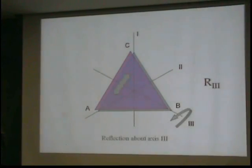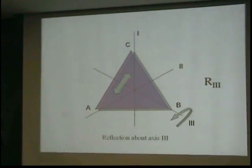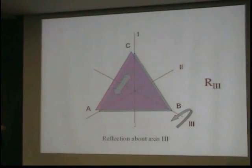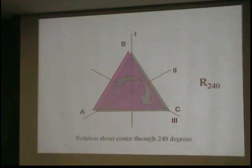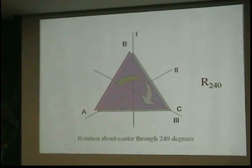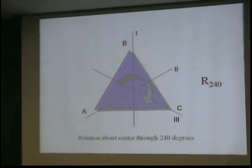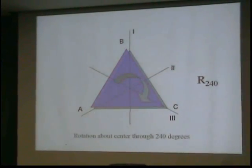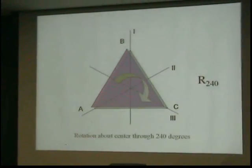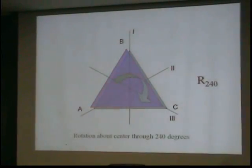Reset. Well, obviously now I can do a reflection about axis three and that will interchange A and C, but it will hold B fixed. Or we can rotate through 240 degrees and that will rotate A all the way around to here, B rotated to here, C ended up here. Anything else?